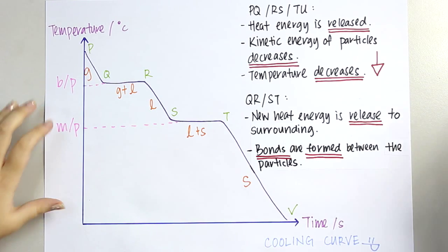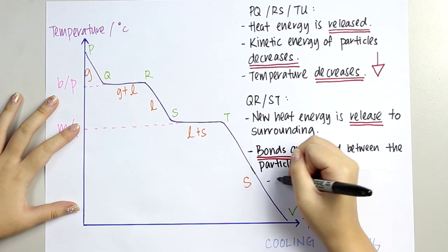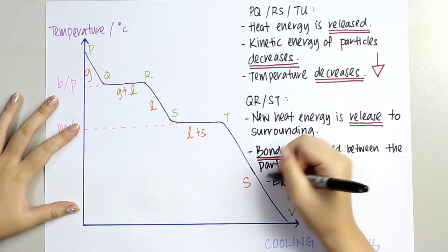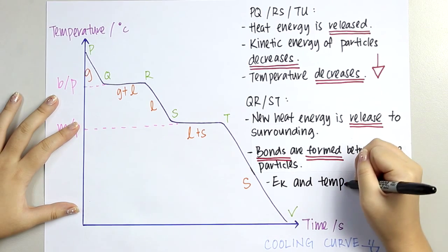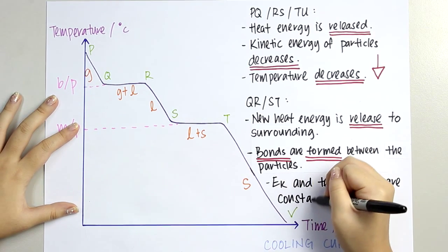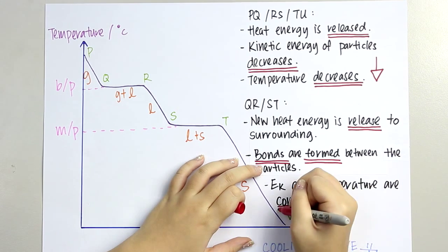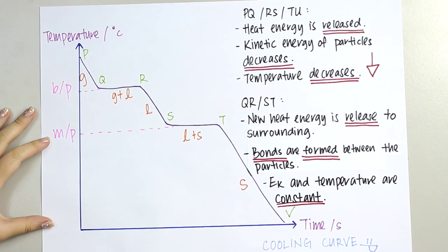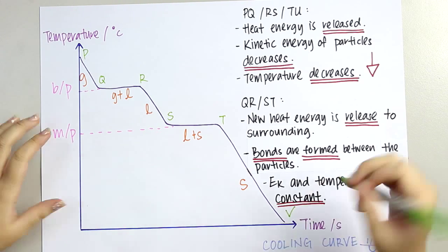The last point is to describe the kinetic energy and temperature. During these stages, kinetic energy and temperature are constant. Many people don't understand why bonds are formed during this phase.